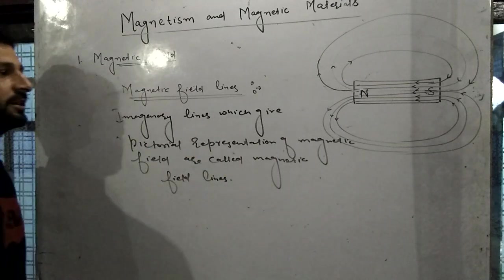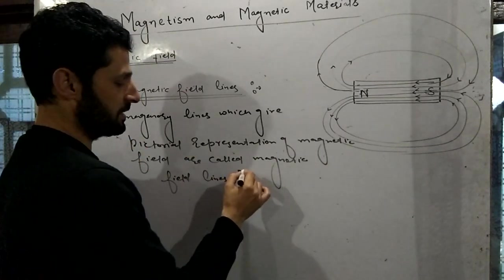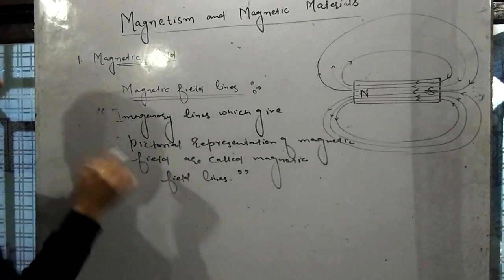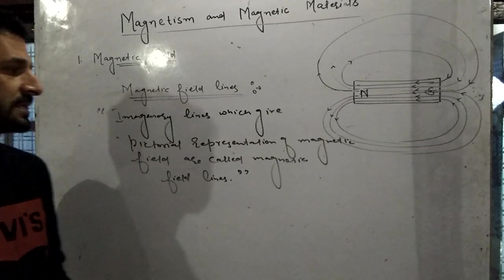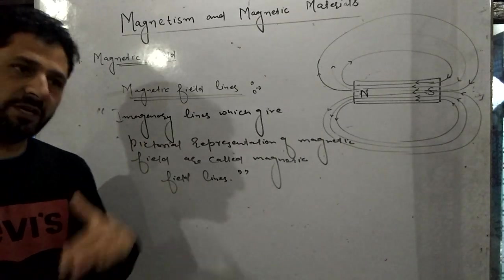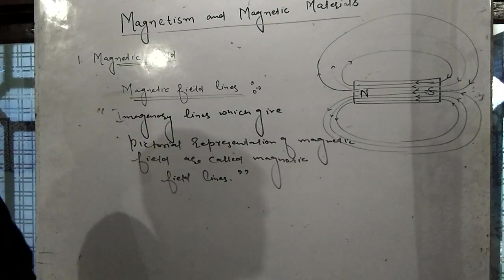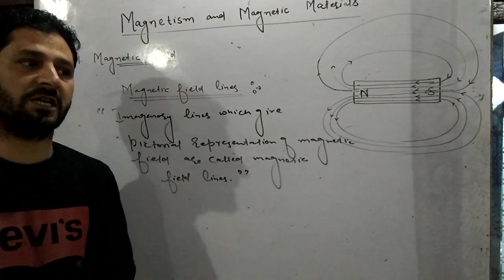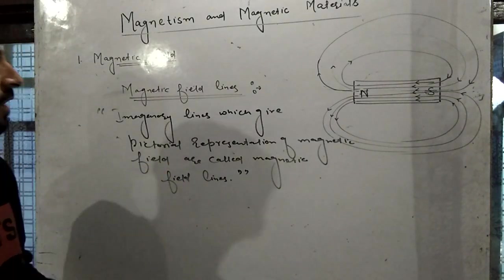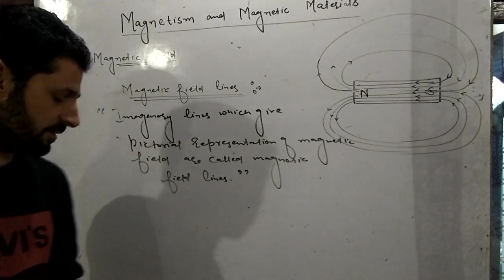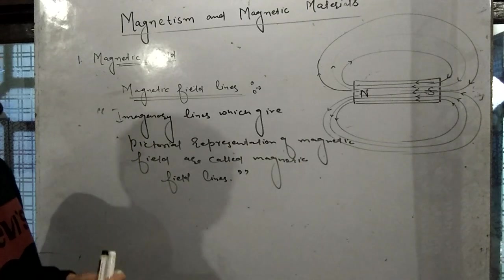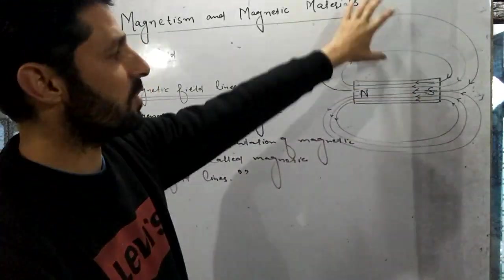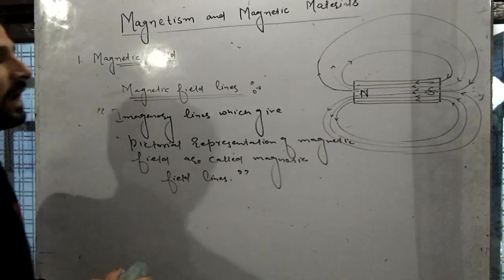Magnetic field lines are the imaginary lines which give the pictorial representation of the magnetic field. They are called magnetic field lines or magnetic force lines. Although these are imaginary lines, they represent the real field. These lines exist around and outside and inside the magnet.